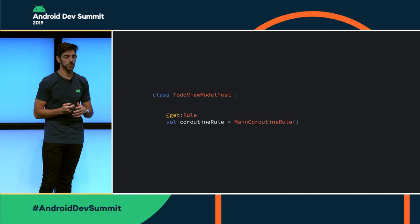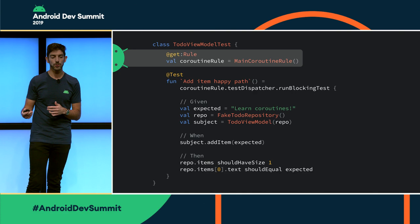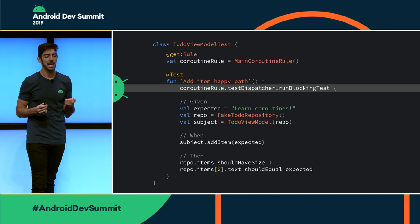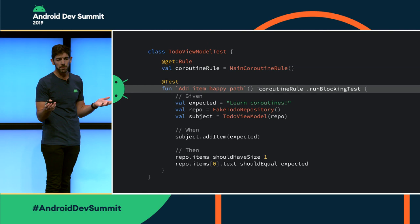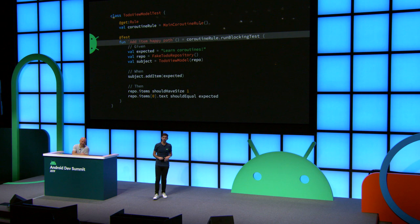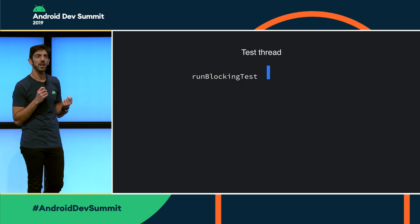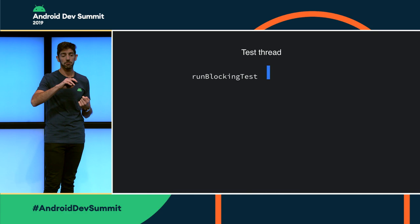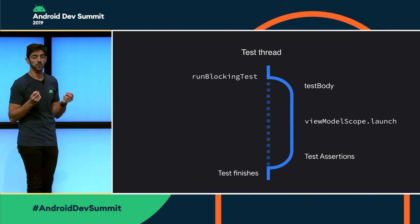Now we are in our ToDoViewModelTest. We define our MainCoroutineRule with the code we just saw. TestCoroutineDispatcher also allows you to call runBlockingTest — with the difference that now every single coroutine started with this test dispatcher is going to execute immediately. You can make it shorter with an extension function — something like coroutineRule.runBlockingTest. Now, visualizing what happens with threading: runBlockingTest creates a new coroutine and everything executes there. viewModelScope.launch is going to be executed immediately, and by the time the test assertions come, all the work the coroutine started is finished.